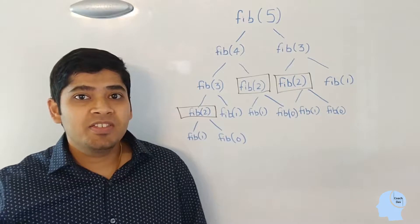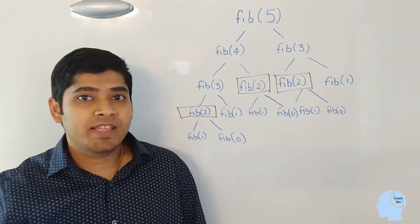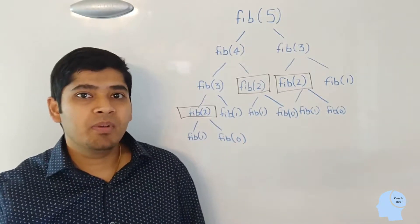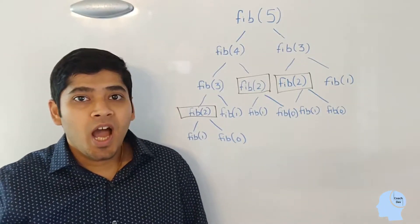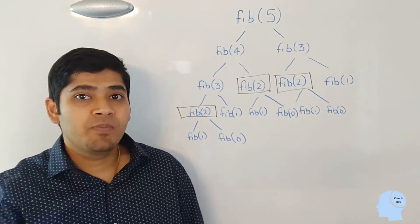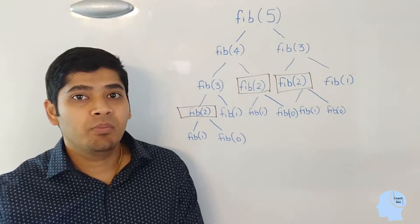And imagine, instead of Fib5, if the example was for some bigger number like Fib10 or Fib20 or Fib30, how many times Fib2 might have gotten computed?